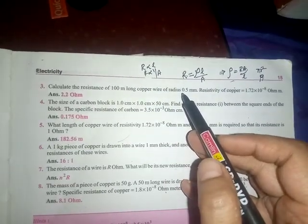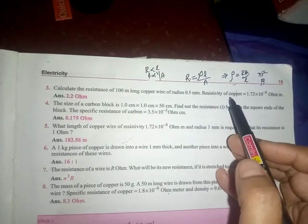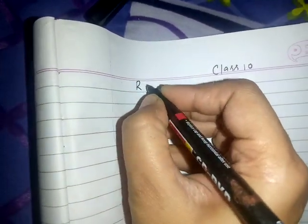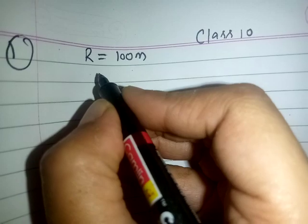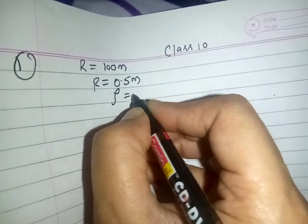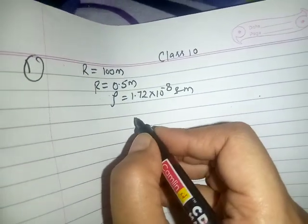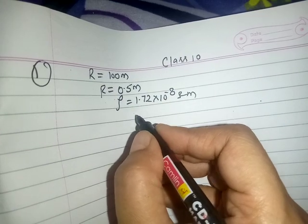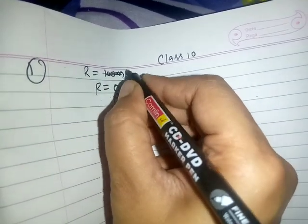The resistivity of copper is given, and you have to find the resistance. What is given: length is 100 meters, radius is 0.5 mm, and resistivity rho is 1.72 into 10 to the power minus 8 ohm meter.